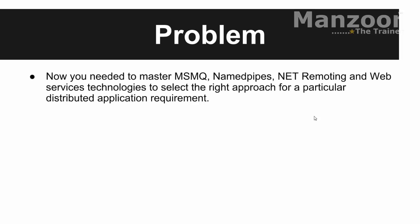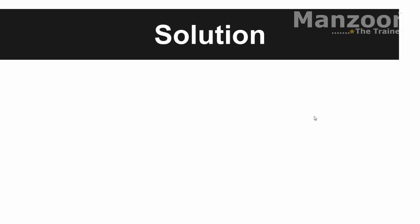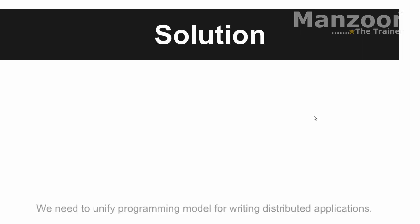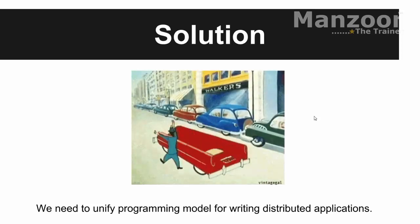Hello everyone. In our last video we saw the problem: we need to master all these technologies, remember all the classes and methods, identify the scenario, and then go for that particular approach. The solution should be a single unified one — unifying technologies like MSMQ, named pipes, web services, and remoting into a single solution. We need to unify the programming model for writing distributed applications.